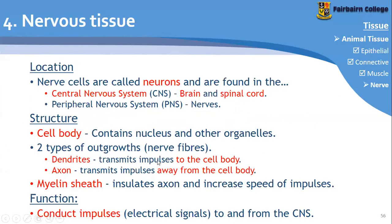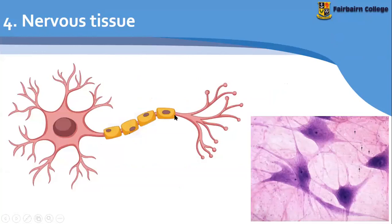And then off of the cell body, you find two types of things coming off of it — two types of outgrowths. And these are what we think of as the long nerve fibers. So in this picture here it is quite short, but these nerves can be very long. It runs the whole length of your body.